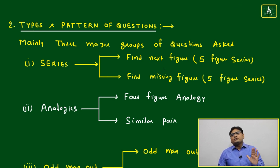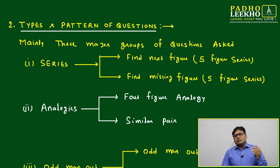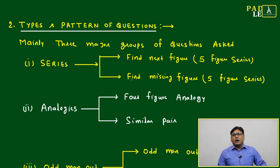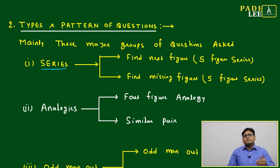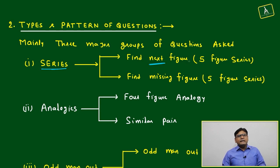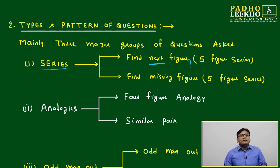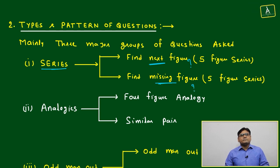Mainly three major groups of questions are there. Apart from these three major groups, certain more subcategories are there. First is series type. Series means anything is happening based on certain logic and we keep moving. After moving four or five steps, the question will ask what will be next. Another category may have five, six, or seven figures or certain pattern in series, and between anyone it is missing. That missing figure we have to find from given available options.